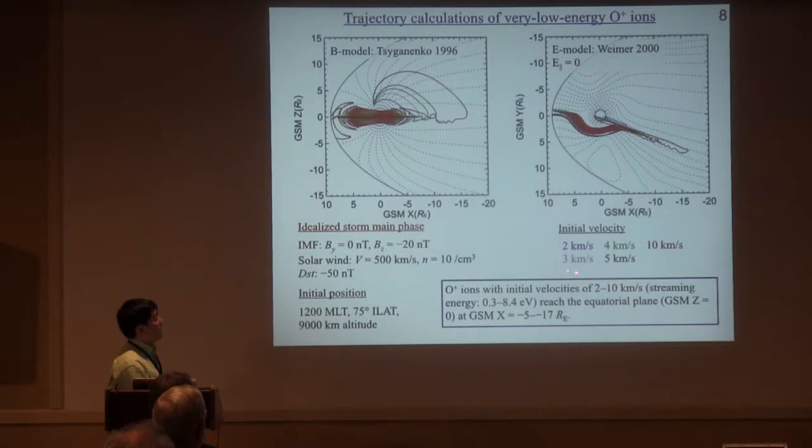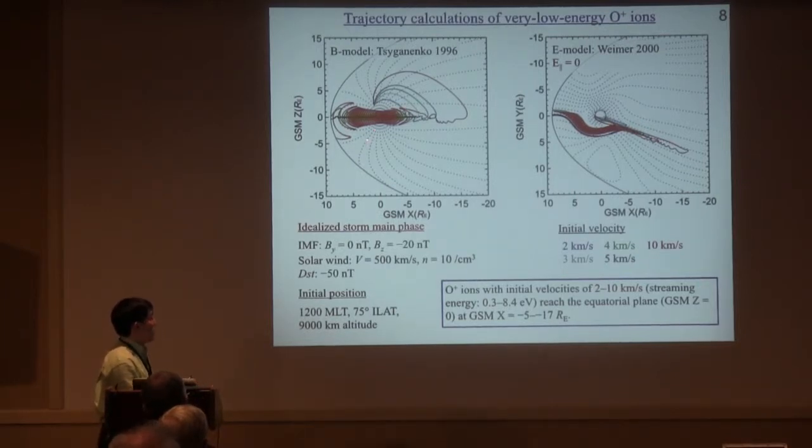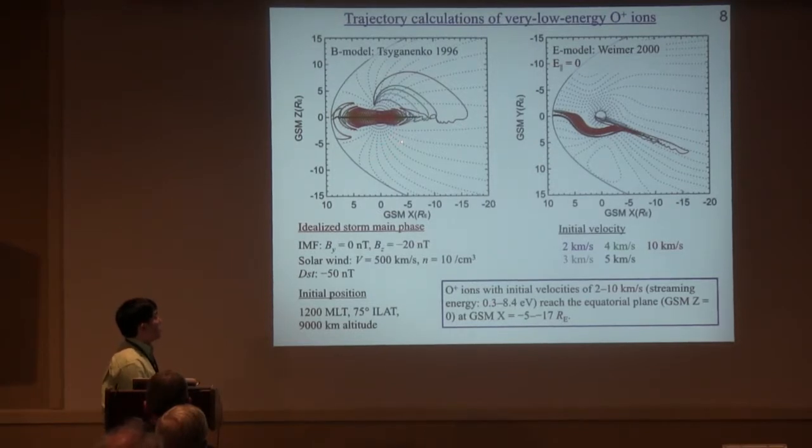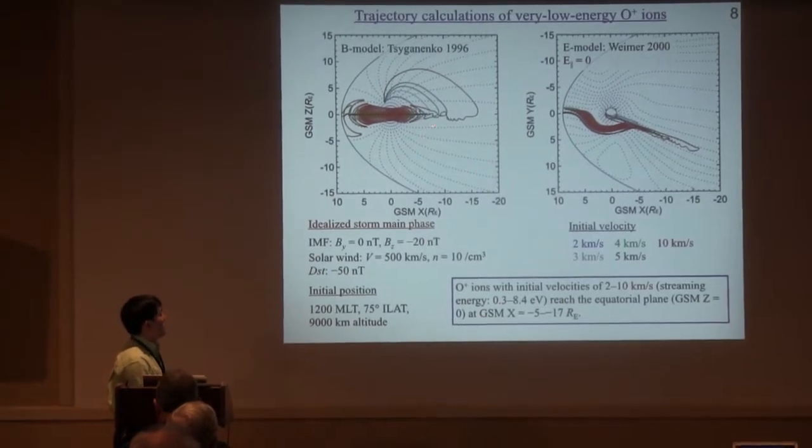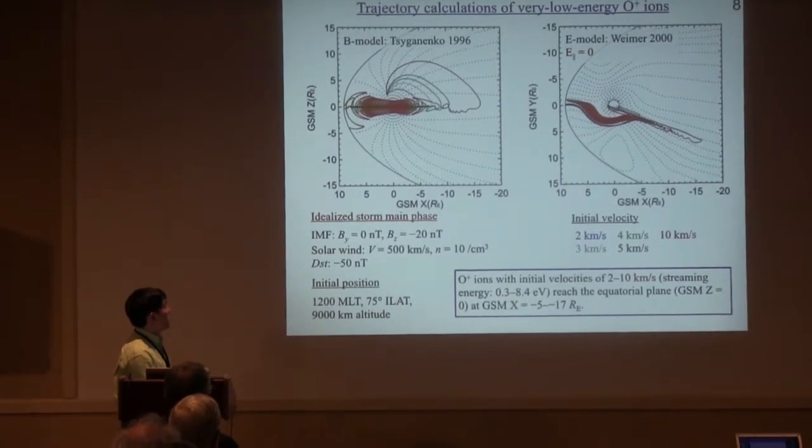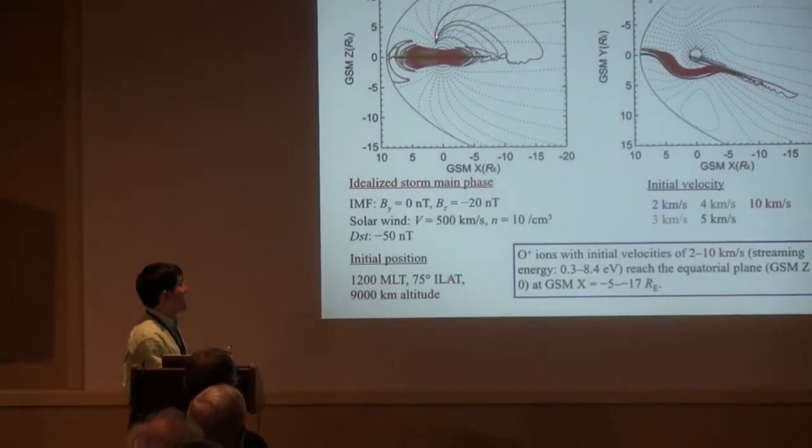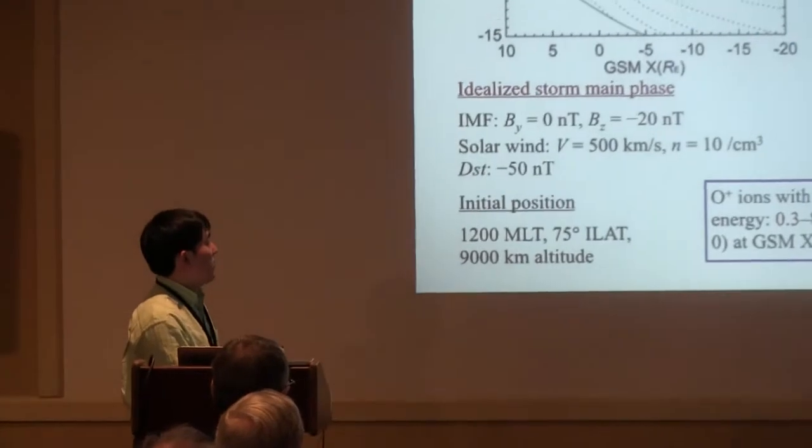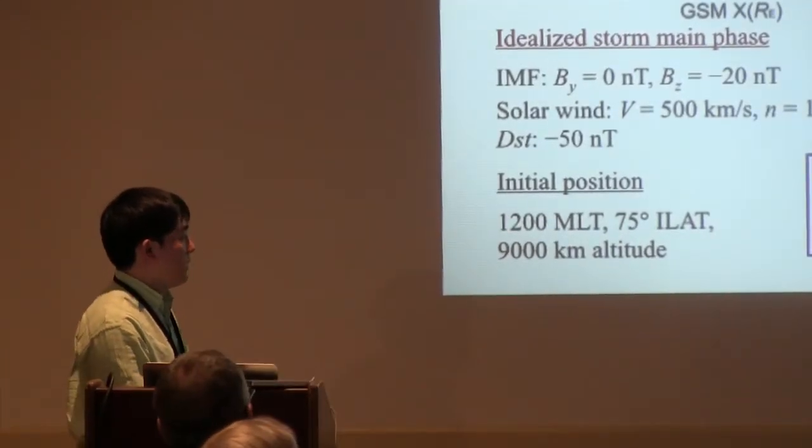The different colors indicate different initial velocity. Oxygen ions with initial velocities of only 2 km per second can reach the equatorial plane owing to the strong centrifugal force during storm time. So we have to take into account such low energy ions when we think about ion supply to the magnetosphere.